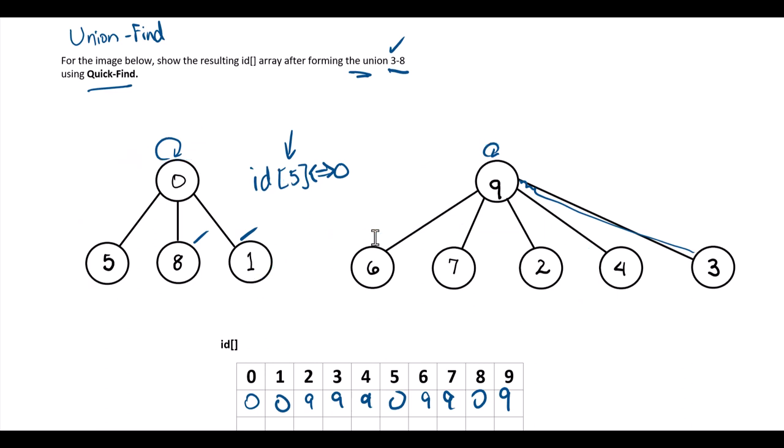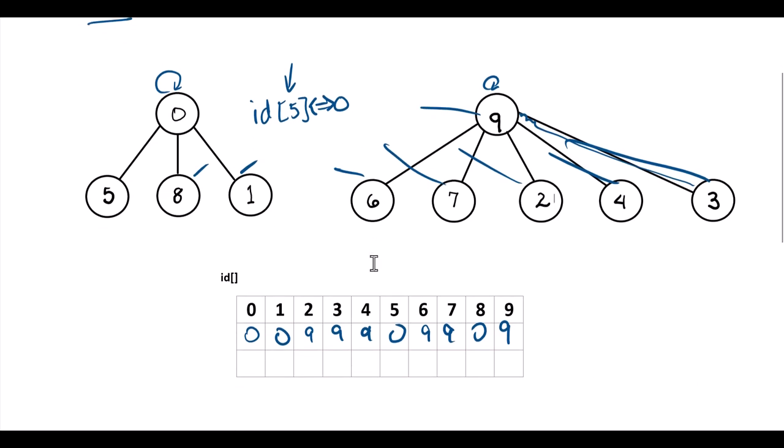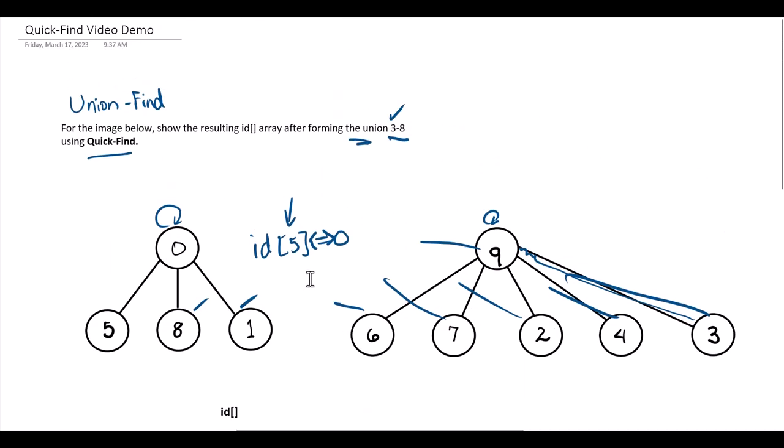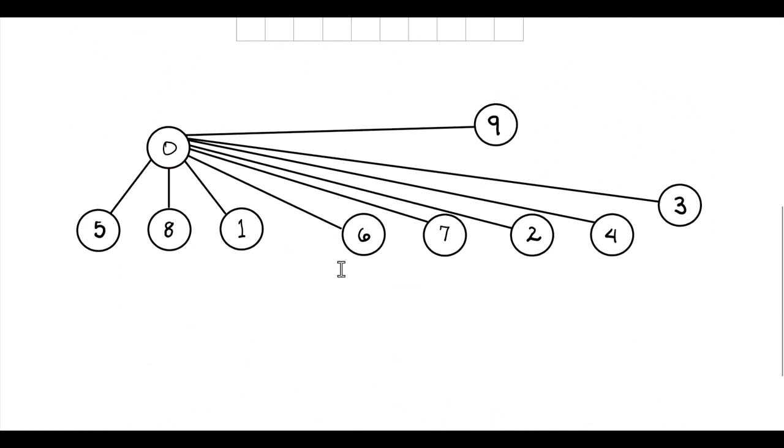How do we do that? Everyone in three will end up pointing to the family of eight. So we're going to redirect, redirect, redirect, redirect, redirect. And all of those elements will then belong to the family of eight, which is the zero. So that's what that would look like.